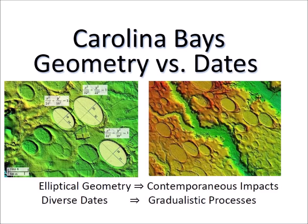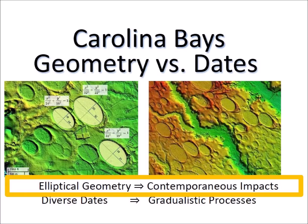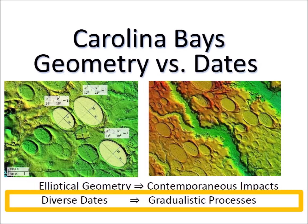The Carolina Bays are shallow elliptical depressions with raised rims whose major axis is oriented toward the Great Lakes. Interpretation of the geometry and of the dates lead to different conclusions about how the bays were created. The elliptical geometry corresponds to cones inclined at about 35 degrees, which implies that the bays originated as inclined conical cavities produced by contemporaneous impacts on liquefied ground. The dates tell a different story: the terrain where the bays are found has been dated from 12,000 years ago to more than 140,000 years ago. The wide range of dates indicates that the Carolina Bays could not have formed all at the same time by a single event, and it implies that the bays formed by gradualistic processes over thousands of years, most likely by the action of wind and water.